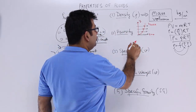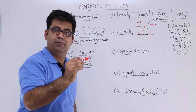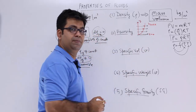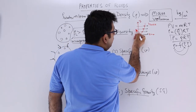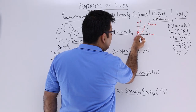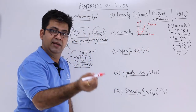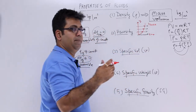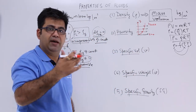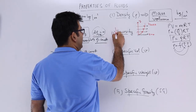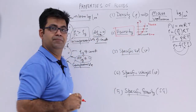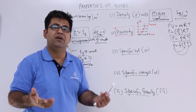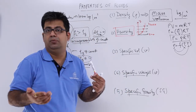The movement of the top-most layer provides some resistance to the movement of the layer below it, and that layer's movement provides resistance to the layer below it. This resistance provided by the movement of one layer to the movement of the other layer is termed as viscosity. Higher the viscosity of a fluid, the more difficult it becomes for us to make it flow.